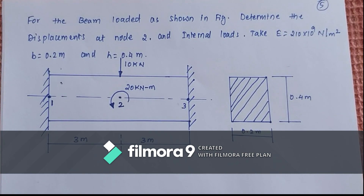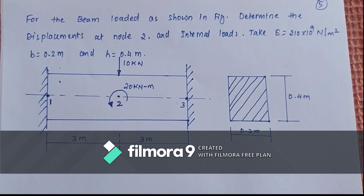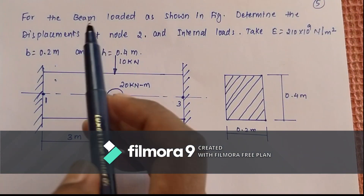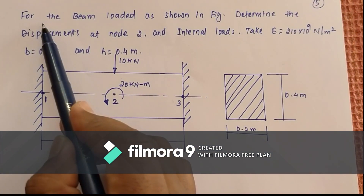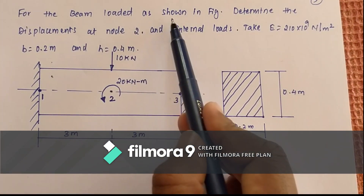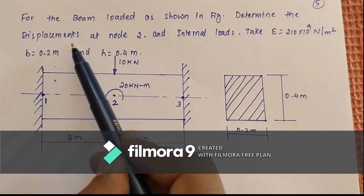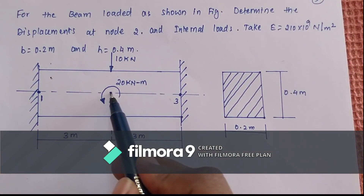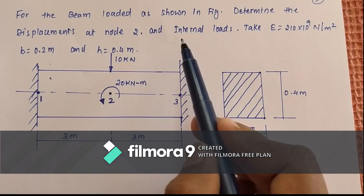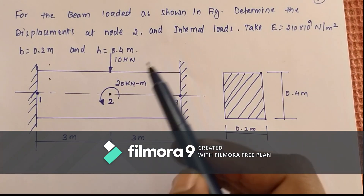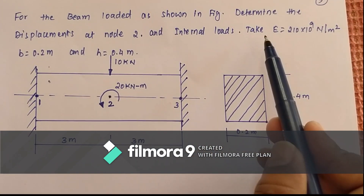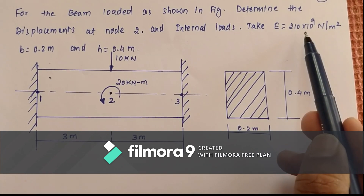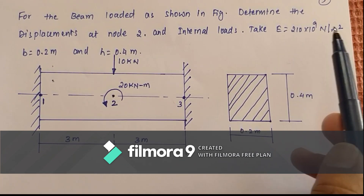In this session we will see how to solve problems on beams. The problem given: for the beam loaded as shown in figure, determine the displacement at node 2. We also have to find out internal loads. Young's modulus is taken as 210 GPa, so 210 into 10 power 9 Newton per meter square.